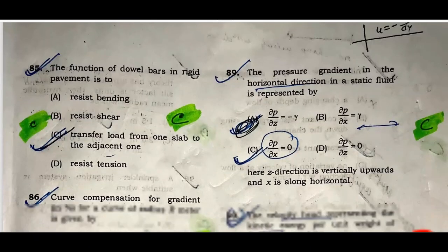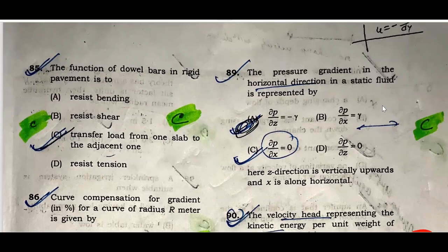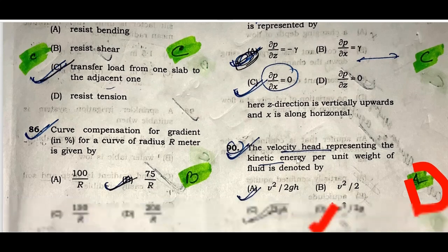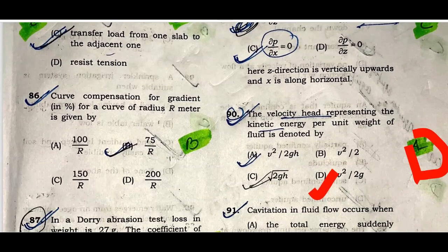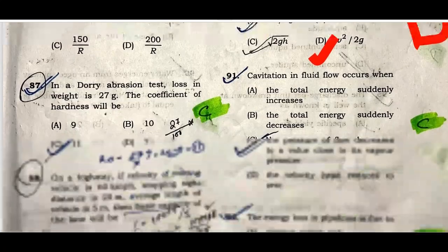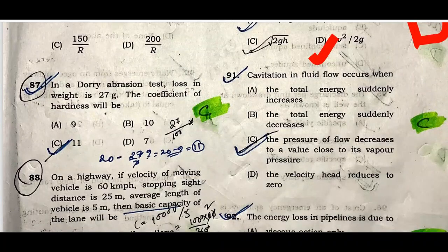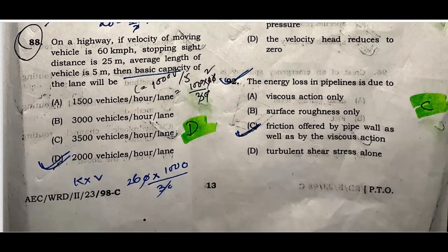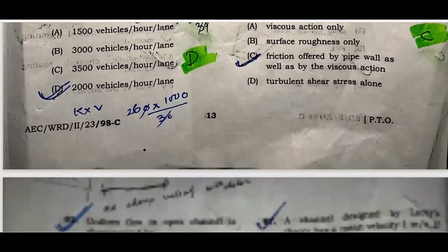Question eighty-nine: The pressure gradient in the horizontal direction in a static fluid is represented by ∂P/∂x. Option C is correct. Question ninety: The velocity head representing kinetic energy per unit weight of fluid is denoted by V²/2g. Option A is correct. Question ninety-one: Cavitation in fluid flow occurs when pressure decreases to a value close to the vapor pressure. Question ninety-two: The energy loss in a pipeline is due to friction offered by the pipe as well as viscous action. Option C is correct.